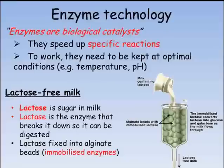To allow these people to drink milk, we can use immobilized lactase. This involves fixing the enzyme lactase into gel pellets. In this way the enzyme can be easily removed from the milk once it has worked, without having to treat the milk any further.